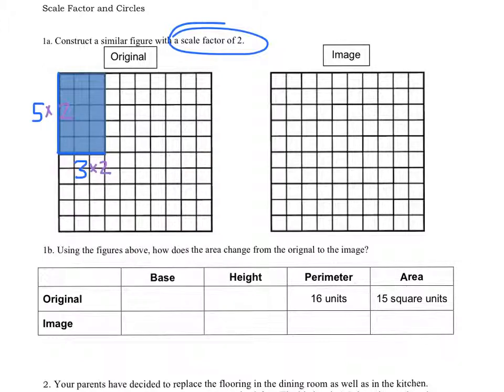So we're going to have a side of 10 by a side of 6. So we're going to go down 10: 2, 4, 6, 8, 10, and over 6: 2, 4, 6. Make our box and color it in.